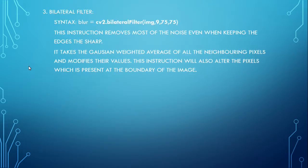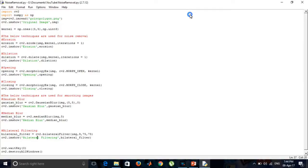The last one is bilateral filter. The syntax is: bilateral filter = cv2.bilateralFilter(img, 9, 75, 75). This instruction removes most of the noise even when keeping the edges sharp. It takes the Gaussian weighted average of all the neighboring pixels and modifies their values. This instruction will also alter the pixels which is present at the boundary of the image. Next, let us execute the code and check the output.